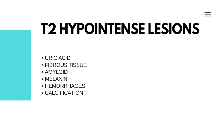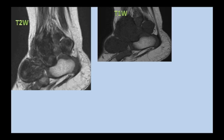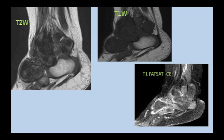What are the possibilities for T2 hypointensity? The list includes uric acid, fibrous tissue, myelite tissue, hemorrhage, and melanin — all of these are T2 hypointense findings in musculoskeletal radiology. Among all these, the best possibility here is fibrous tissue, so we consider fibrous tissue as the most likely explanation.